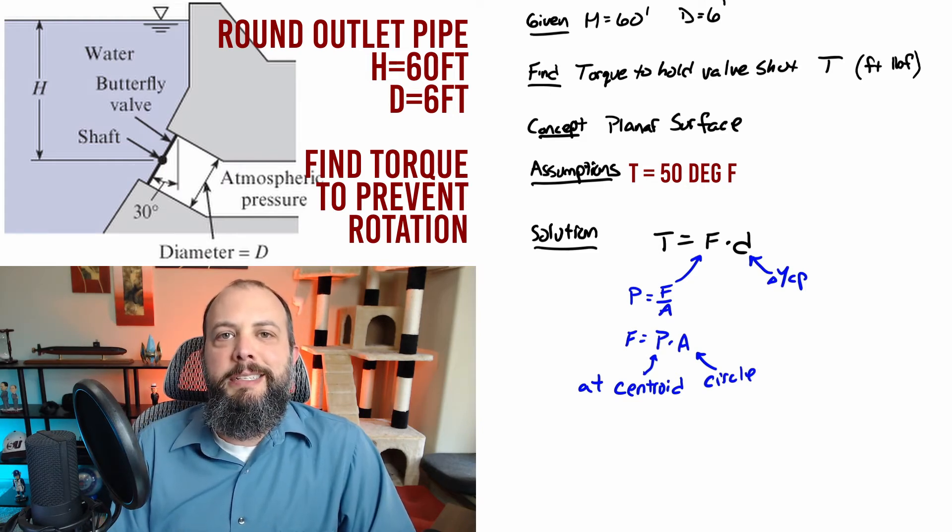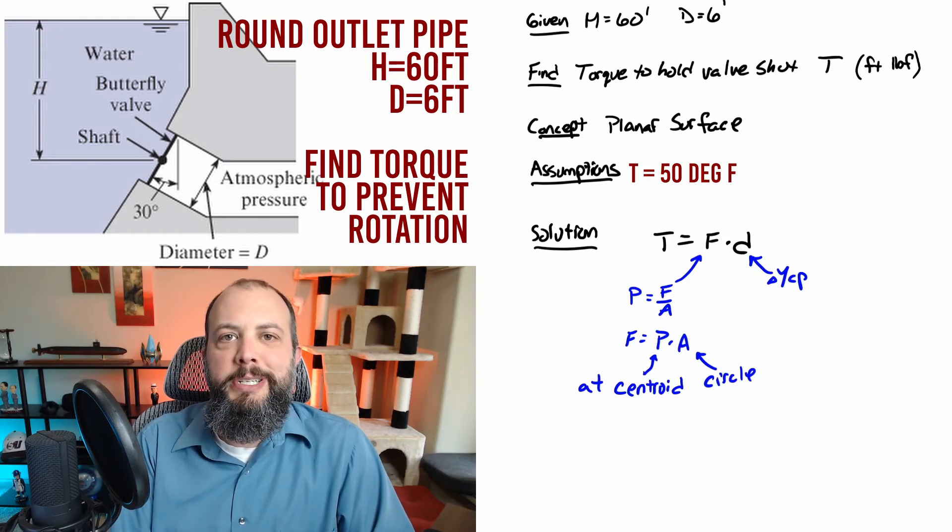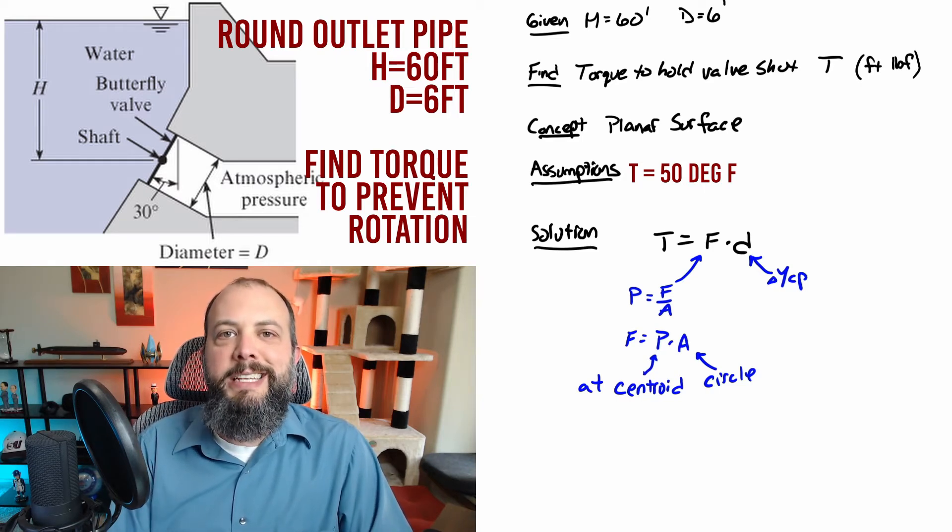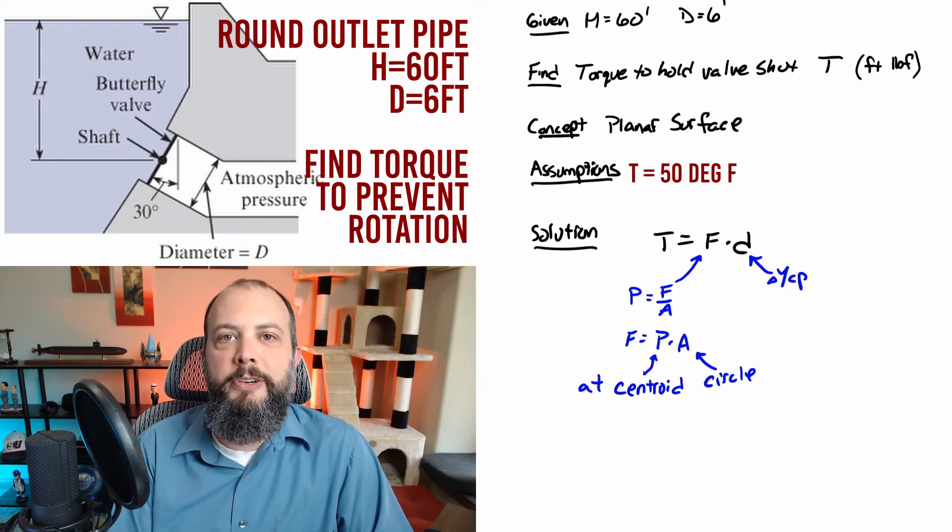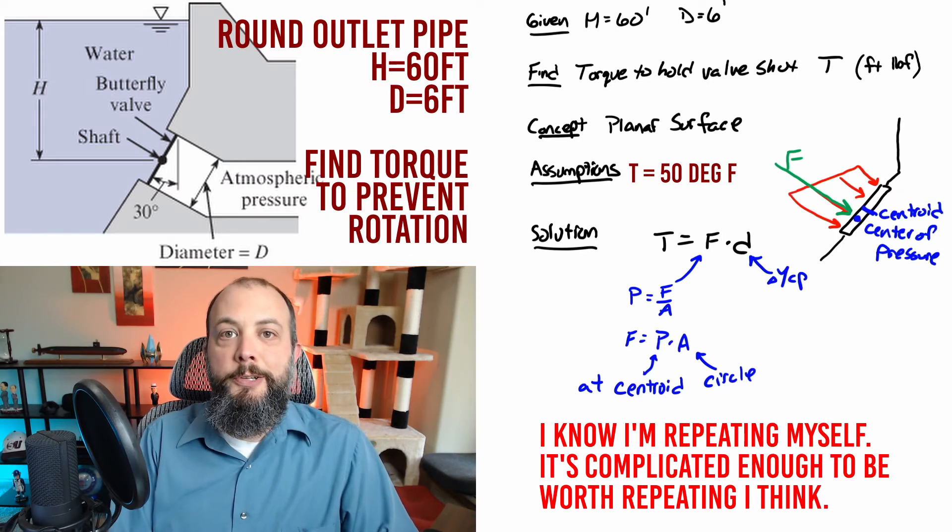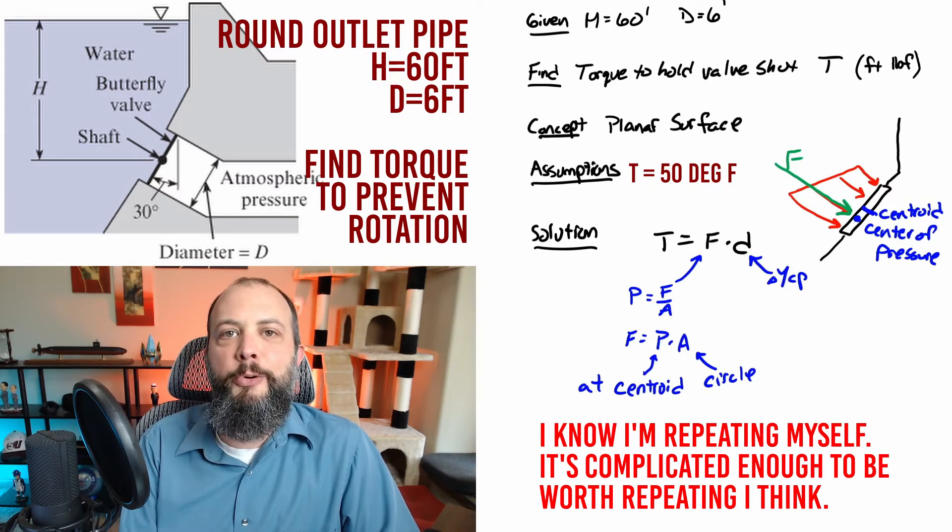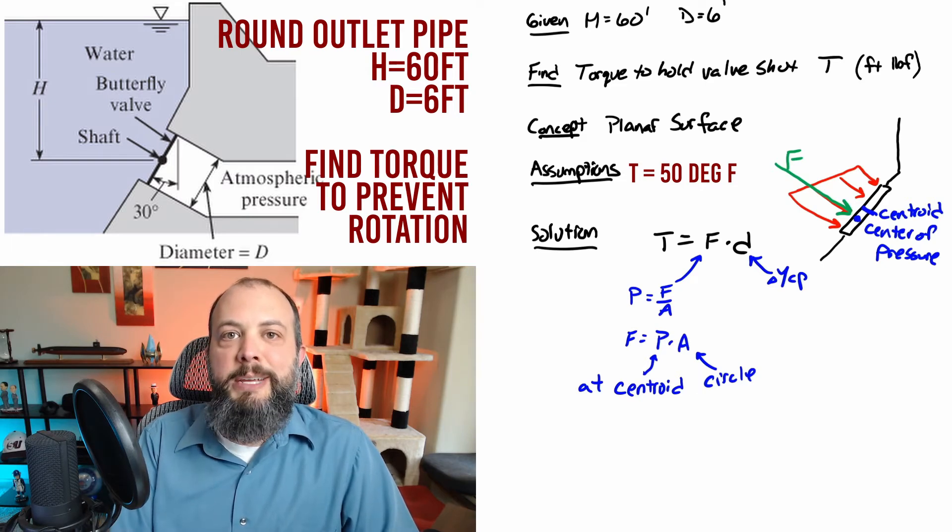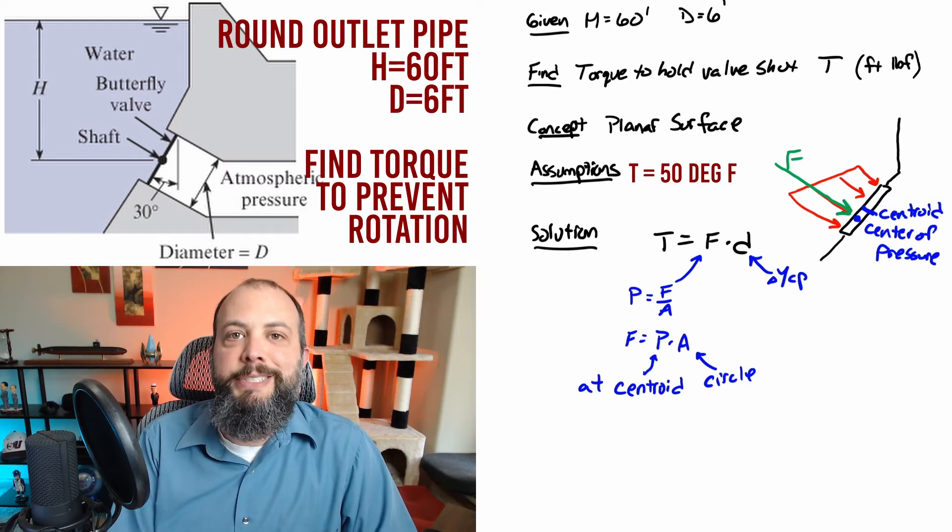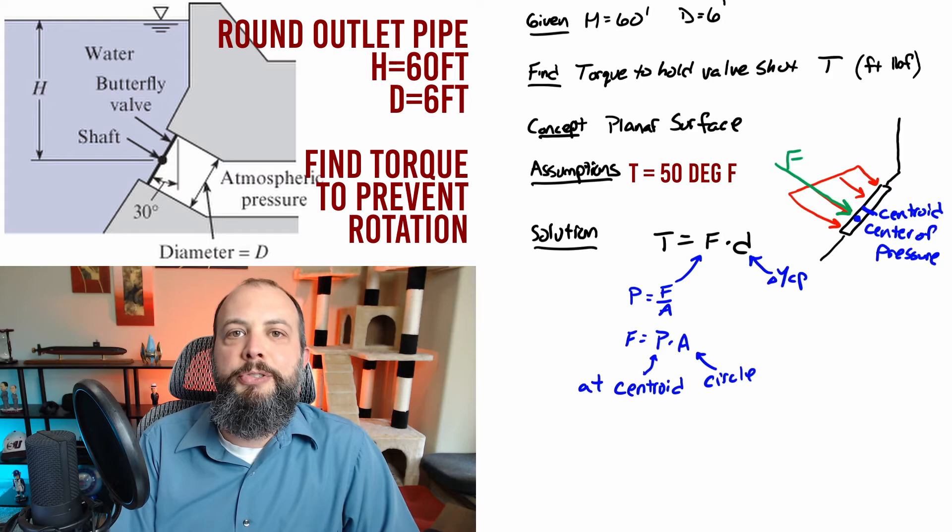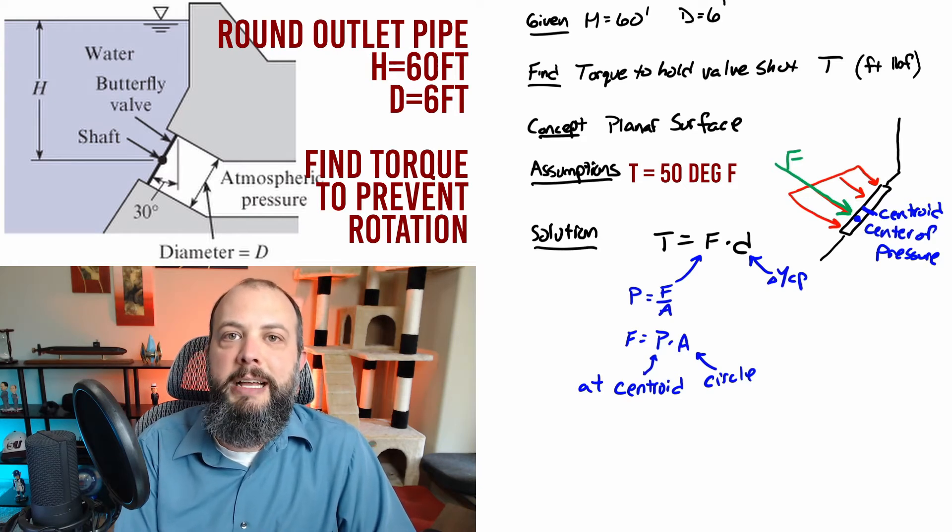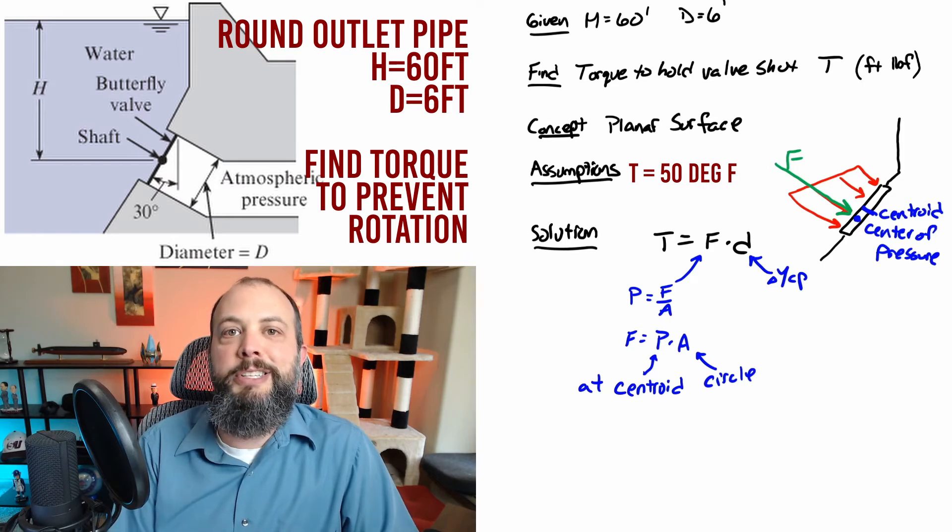That distance is going to be the distance from where the force acts to the hinge. I've labeled this as delta Y CP. Drawing a sketch might help explain these terms. The centroid of the circle is just the center of the circle, but pressure acting on that hatch is not uniformly distributed. As water gets deeper, the pressure is going to increase. If you think back to your statics course, this is like a trapezoidal shaped distributed load. The overall force is shifted a little bit lower, and that's why the center of pressure will be below the centroid.